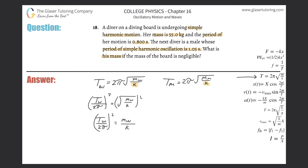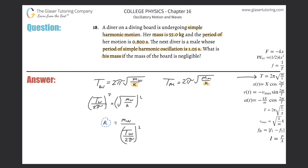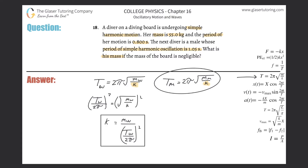Now solve for k by cross-multiplying — bring k out of the denominator and move the squared term into the denominator. So k equals the mass of the woman divided by the quantity (period of the woman divided by 2π) squared. That's the formula for k, and the same applies for the man.